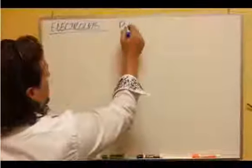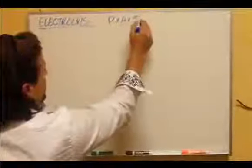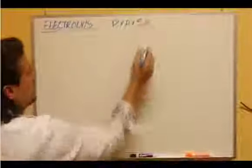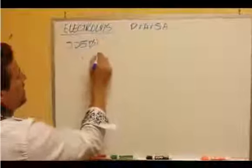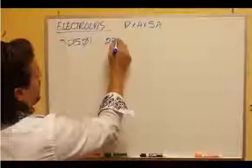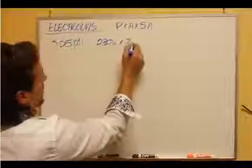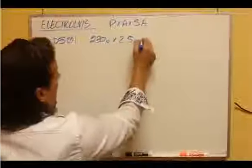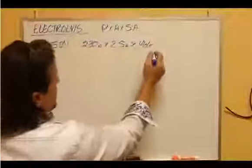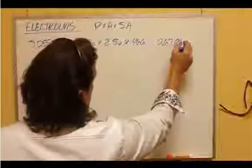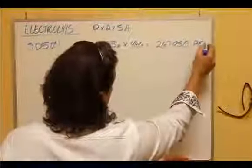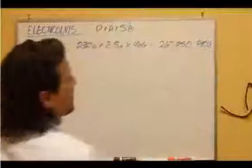It's a question of power times the amperage times the surface area of the plates. So, for instance, the SD501, which is what we used for Schuyler, has 230 watts, it has 2.5 amps, and it has 466 square inches of plate space, which gives you a number of 267,950 potential electrolysis units.